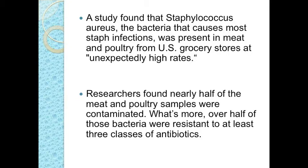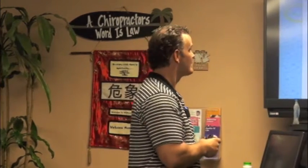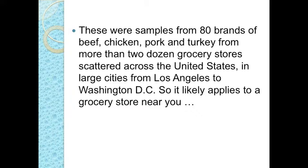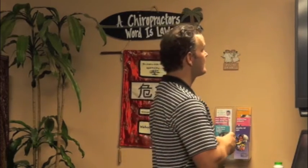A study found that Staph aureus — the bacteria that causes most staph infections — was present in the meat and poultry in grocery stores at unexpectedly high rates. Over half of those bacteria were resistant to at least three classes of antibiotics. There were 80 brands of beef, chicken, pork, and turkey from two dozen grocery stores from L.A. to Washington, D.C. The reason there are so many infections nowadays is the use of low doses of antibiotics in livestock, which creates an ideal breeding ground for drug-resistant bacteria that moves from livestock into humans. Even organic produce can be affected through contaminated manure used as fertilizer.